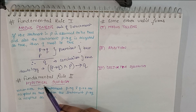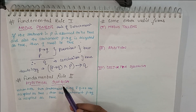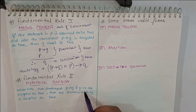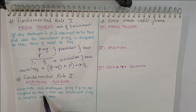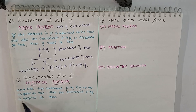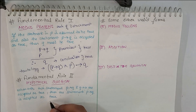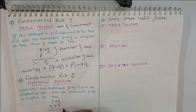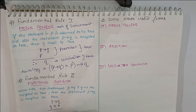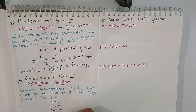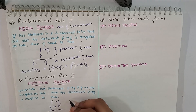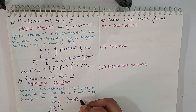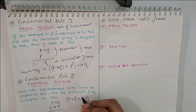Rule number two is known as Hypothetical Syllogism. Hypothetical Syllogism says: whenever two statements — P implies Q, and Q implies R — are accepted as true, then the conclusion P implies R is also true. In tautology form: P implies Q, and Q implies R, gives P implies R.